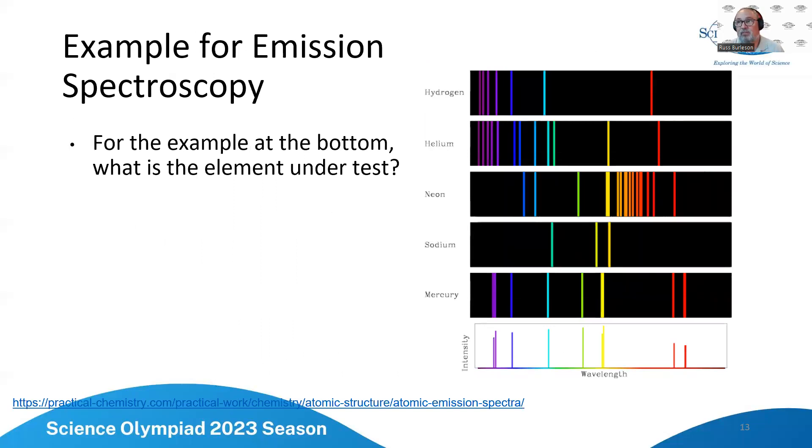So let's talk about emission spectroscopy. For the example at the bottom, what is the element under test? So what we do here is we try to match them up. Now if I look at it, it's not hydrogen because those don't match up. It's not helium because those don't match up. It's definitely not neon. It's not sodium. So the answer is it's mercury because all the lines match up. Now you'll notice that when you see the intensity, while there's still blips at those locations, they're not always going to be at the same level. In fact they rarely are, and so the important part is making sure all the lines match up.